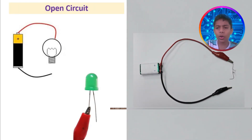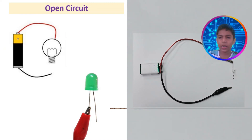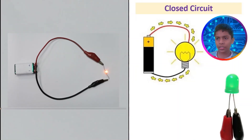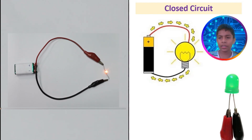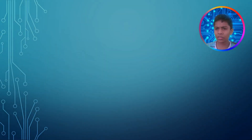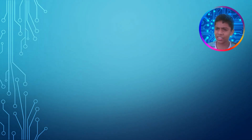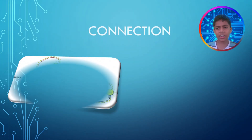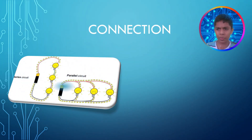An open circuit is not complete and doesn't work, and a closed circuit is complete and it works. You can see that using real-time pictures shown. Our next topic is going to be connection, which is divided into two parts.